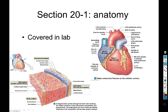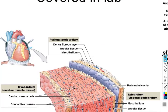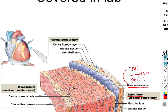The pericardium is a double-layered sac that surrounds the heart. The thin layer that lines the surface of the heart is called the epicardium, also referred to as the visceral pericardium. This is a thin layer of mesothelium — a squamous cell epithelial type — with a little connective tissue underneath, covering the outer surface of the heart. Then there's a space called the pericardial cavity, which is the space between pericardial layers.